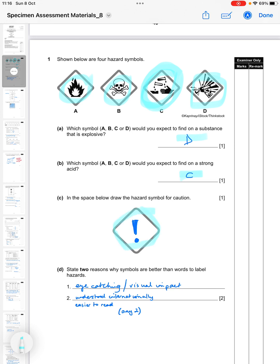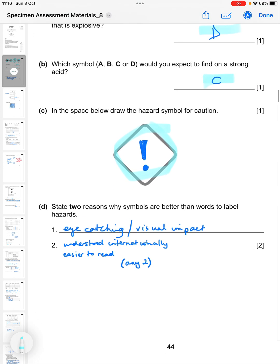In the space below draw the hazard symbol for caution - so it's just an exclamation mark in that diamond shape. State two reasons why symbols are better than words to label hazards. The first thing is they're more eye-catching or have greater visual impact, and you could also say that they're understood internationally or that they're easier to read. Any two of those would get you your two marks.